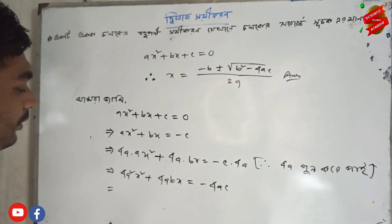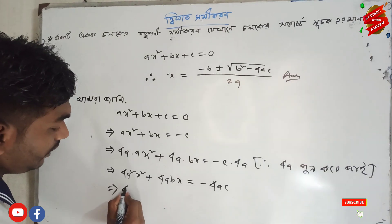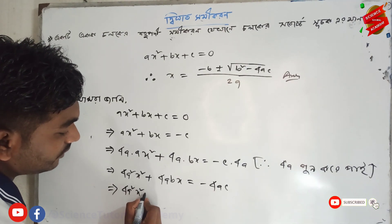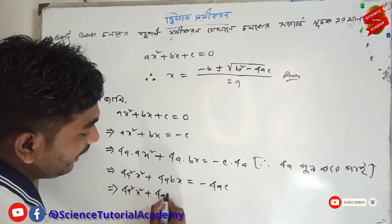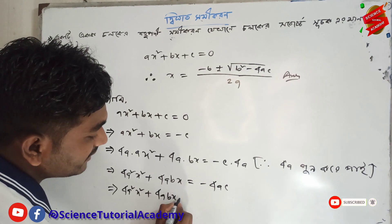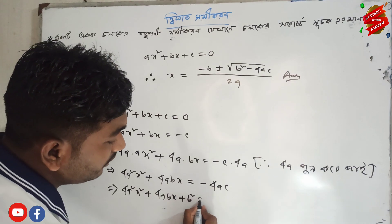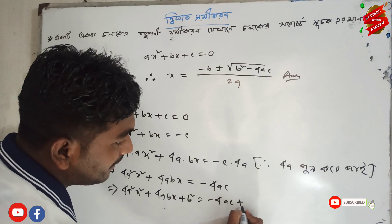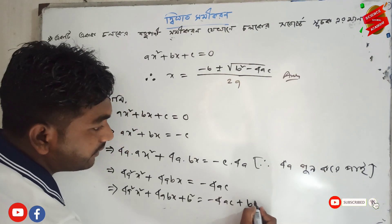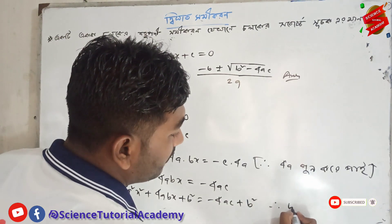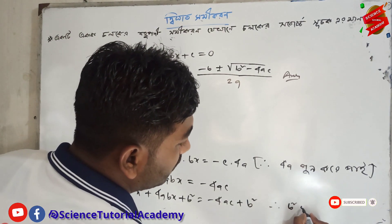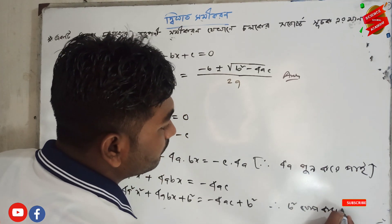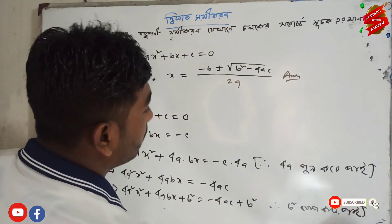We will write: 4a squared x squared plus 4abx plus b squared equals minus 4ac plus b squared.